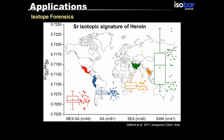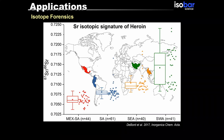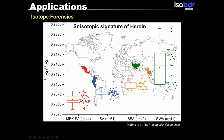the heroin produced in different regions of the world — like Central America, South America, Central East Asia, and Central West Asia — shows different strontium isotopic signatures. This helps us if some federal agency has confiscated some drugs; they can analyze the strontium and understand where those materials are potentially coming from.